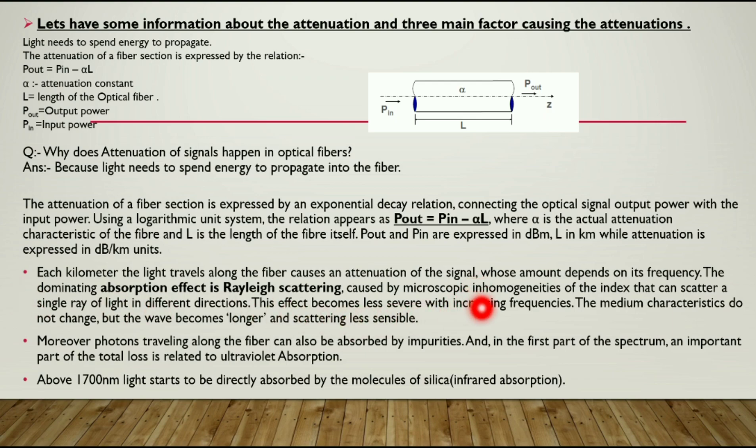The term inhomogeneities means the refractive index of the fiber is not uniform from the upper to the core. Whenever we are moving to the core the refractive index changes.